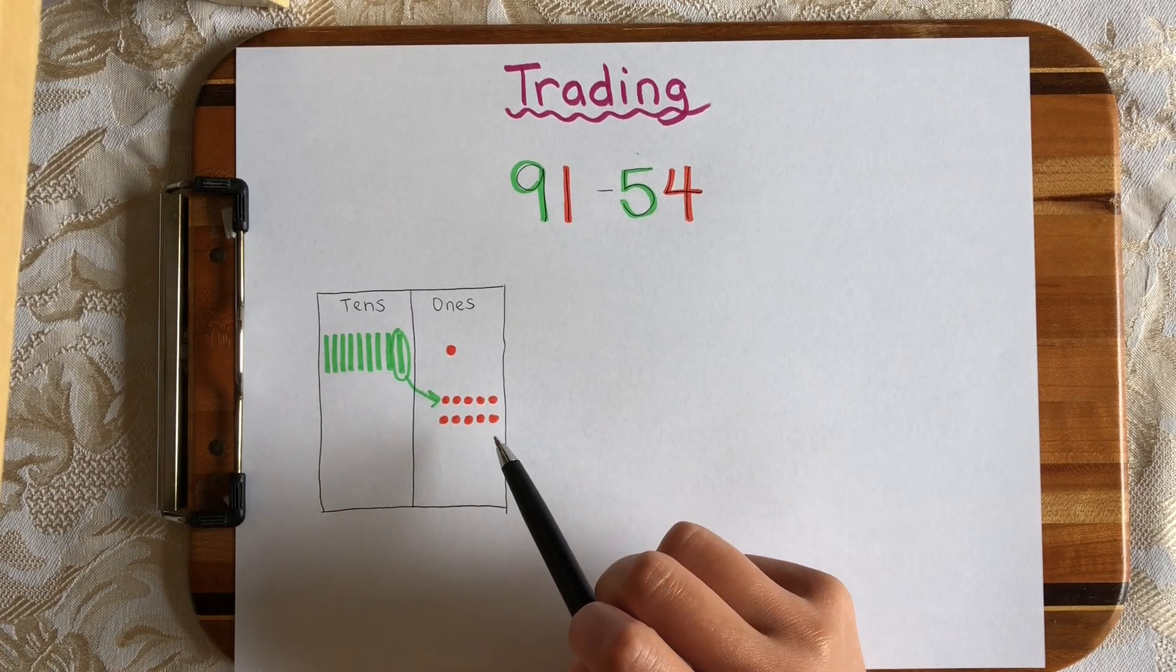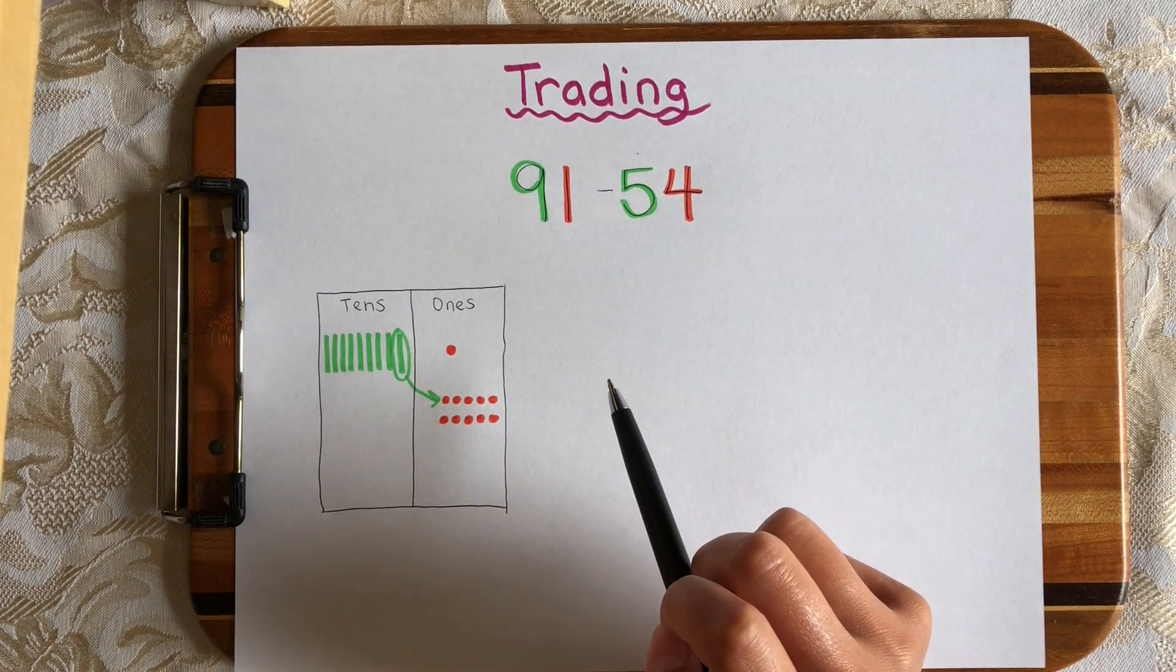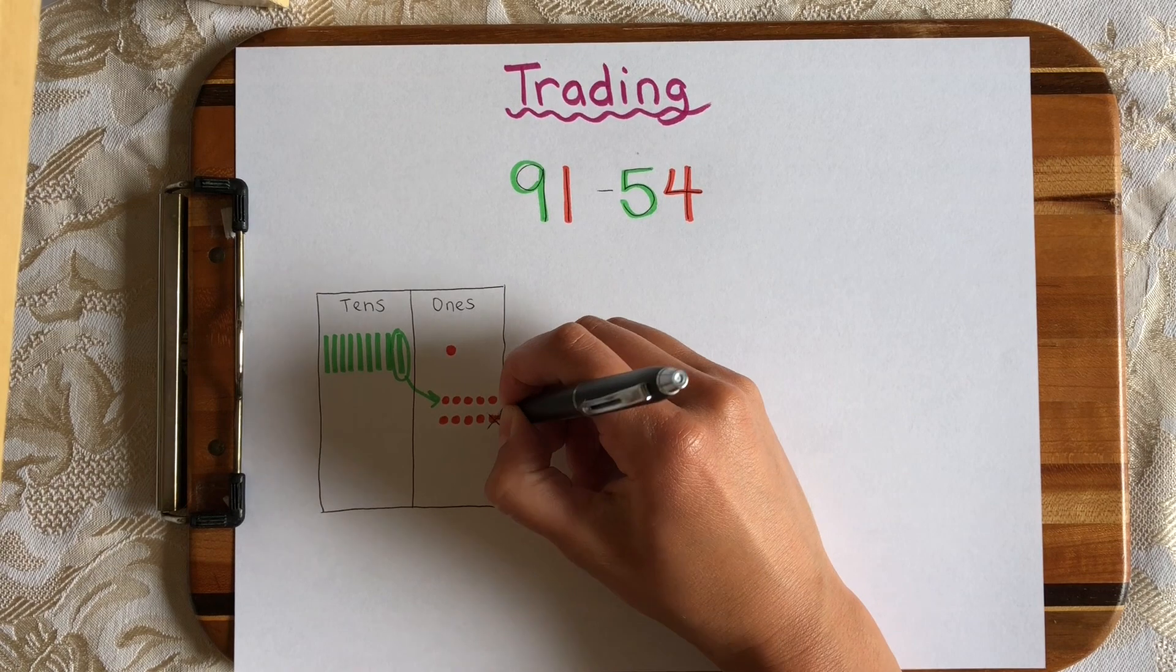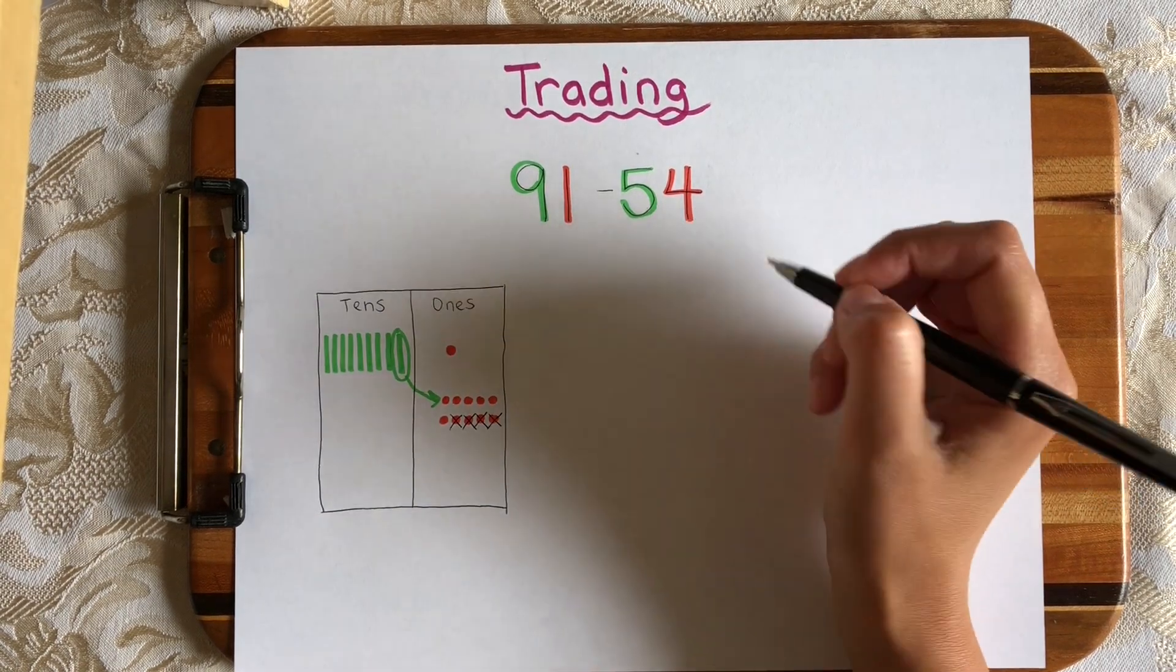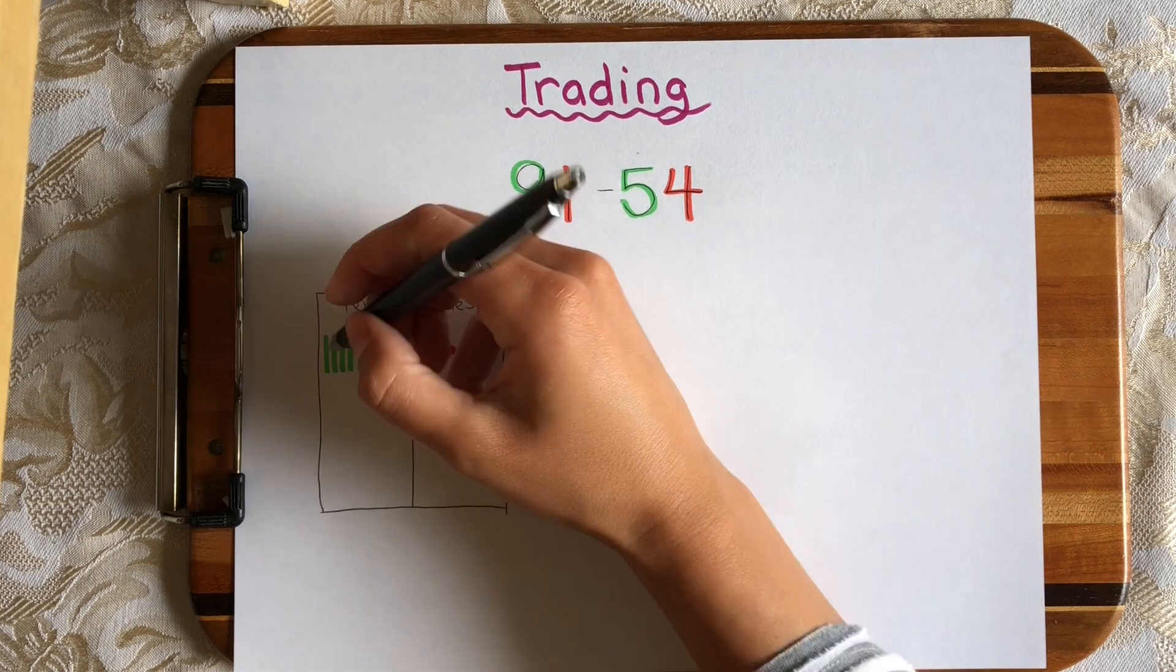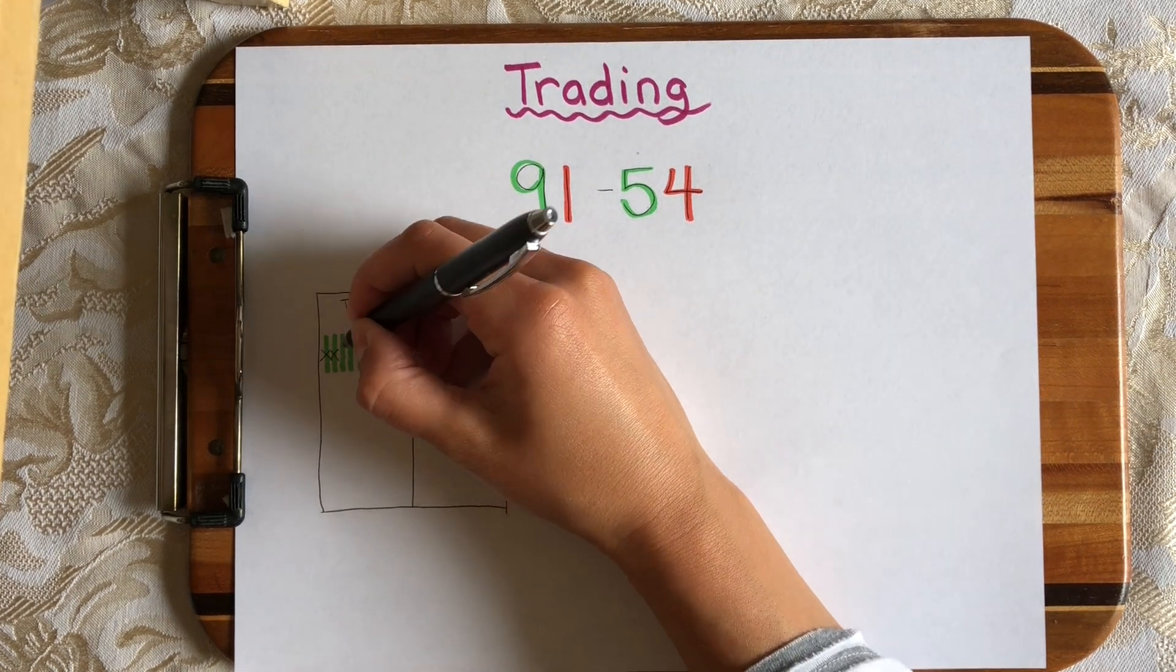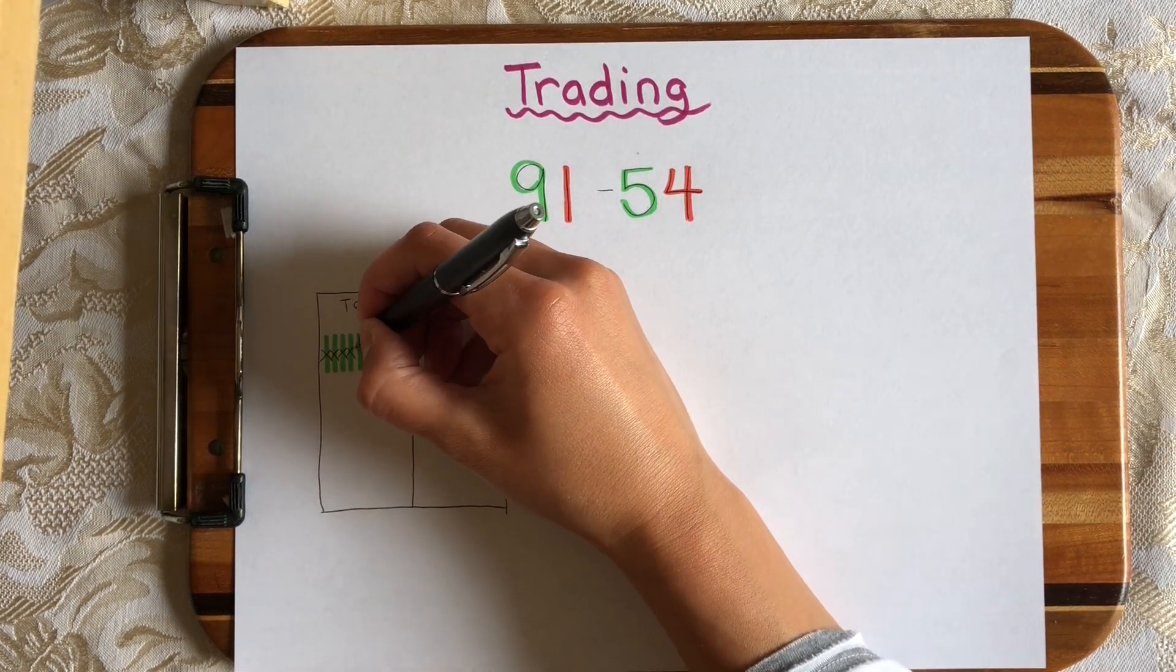So here's 91 and now I need to subtract 4 ones. So I can take away 1, 2, 3, 4 and I need to subtract 5 tens, 1, 2, 3, 4, 5.